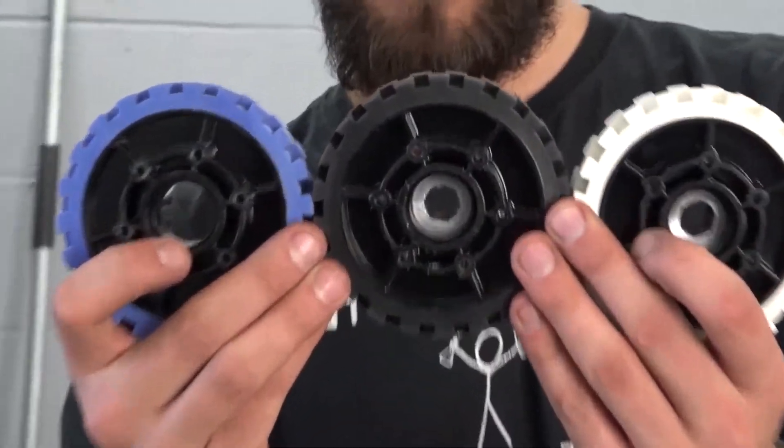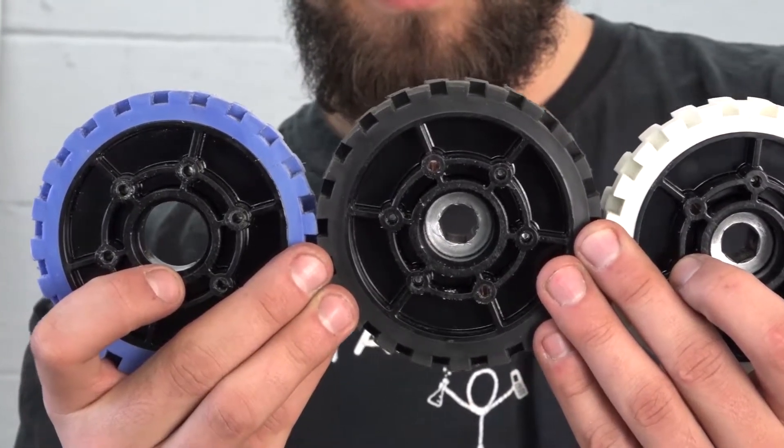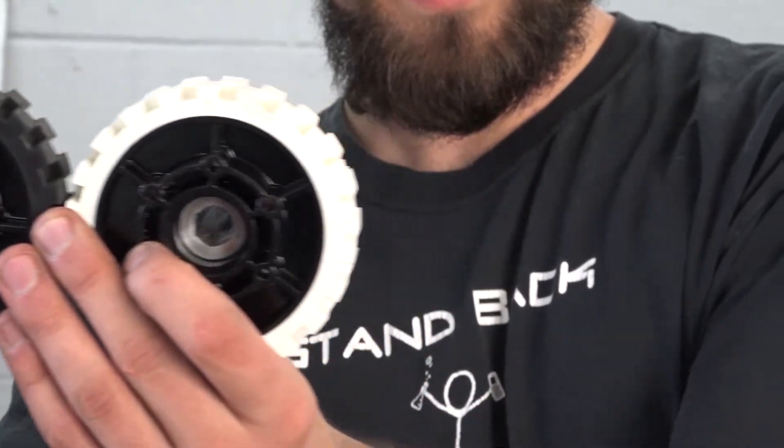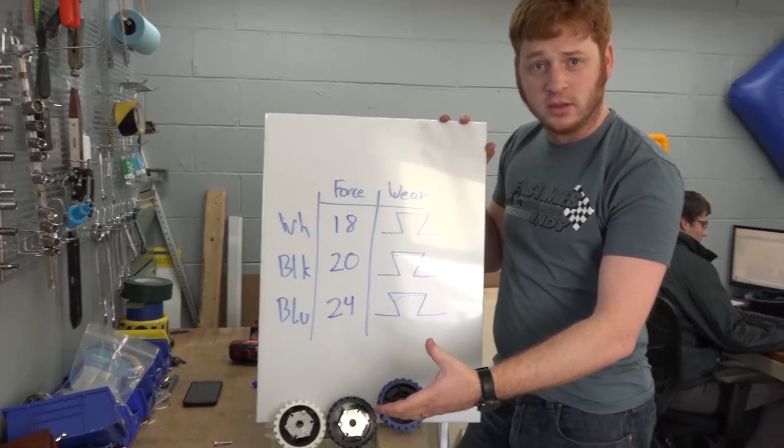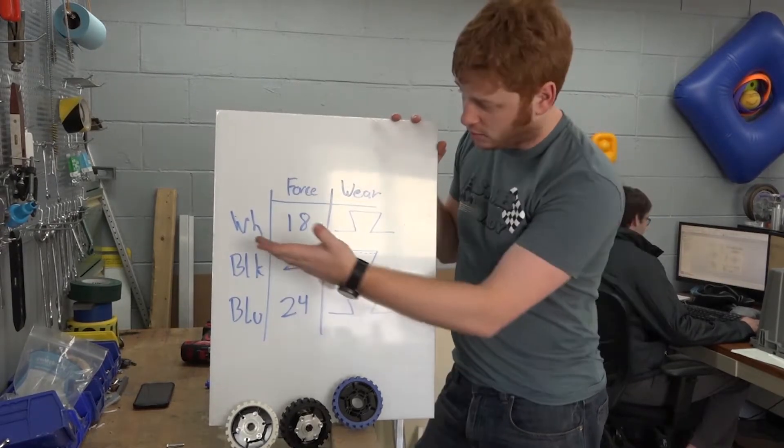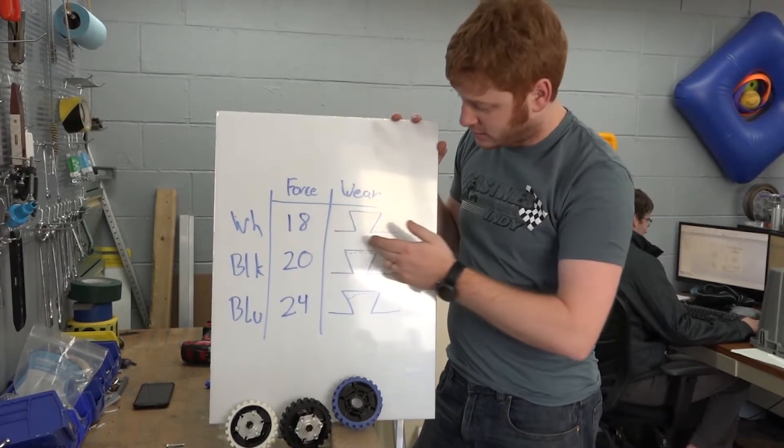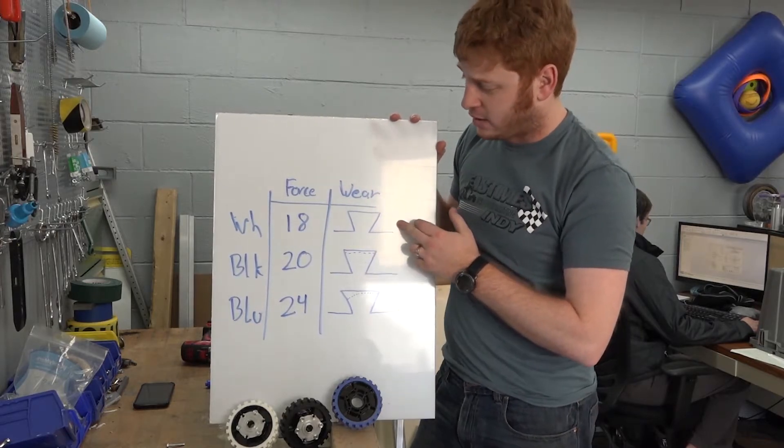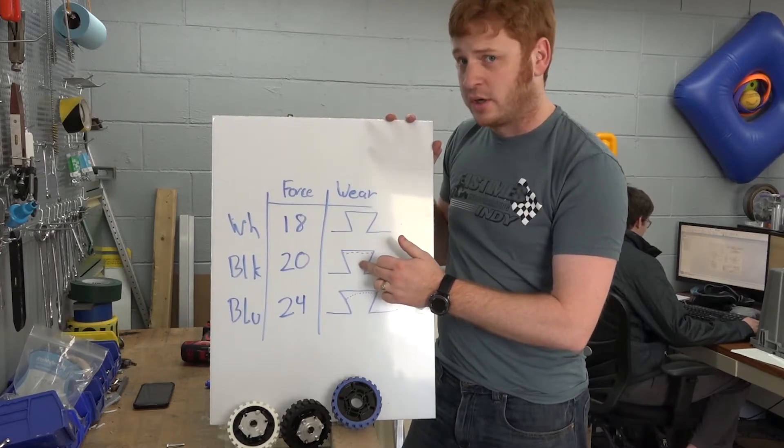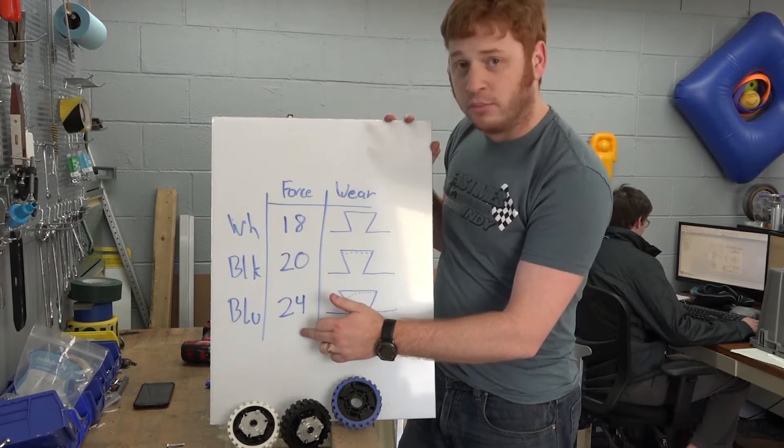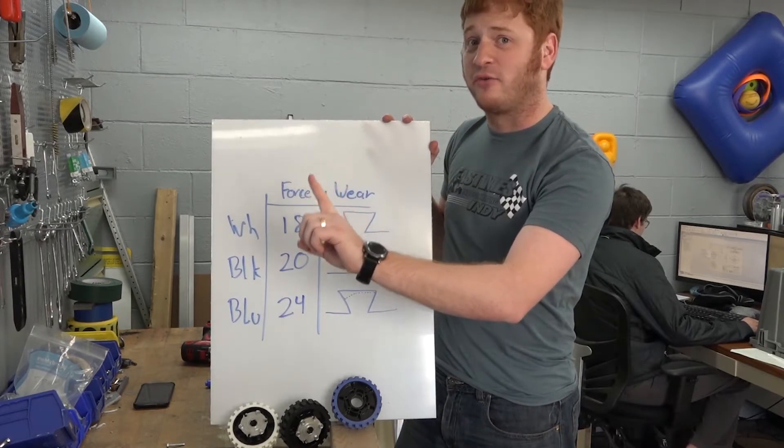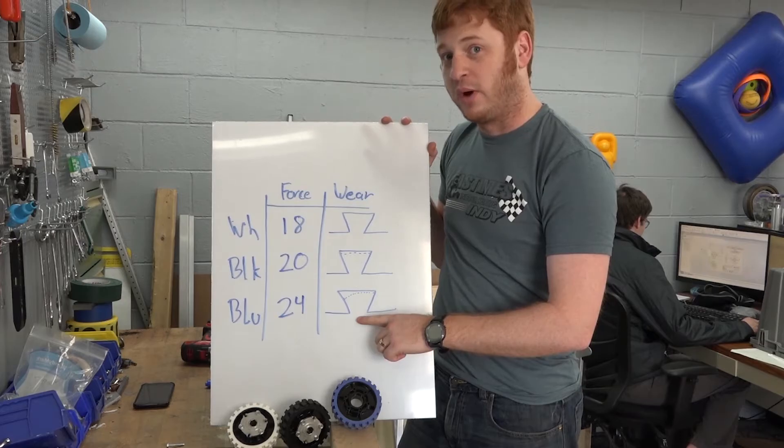Here are our three wheels. We can see the results from our wheel tread lifespan performance testing. The white wheel had the lowest force but saw almost no wear. The black, softer compound wheels had a higher force but we started to see some wear. The blue, softest compound wheels had an even higher force and even more wear.